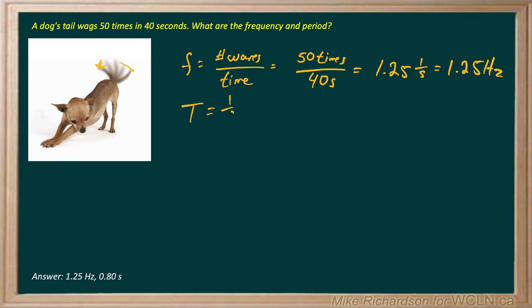Now period is 1 over the frequency as long as my frequency is in hertz. So 1 over 1.25 hertz. Remember that's 1 over seconds. Gives me seconds. 0.80 seconds is the period. How long it takes for the wave to go there and back.